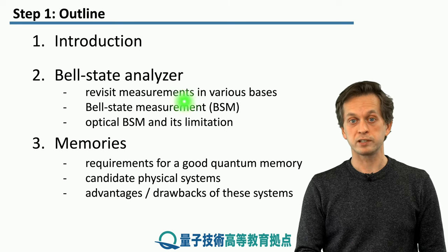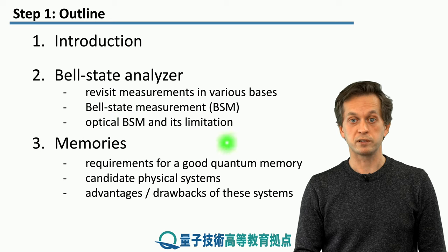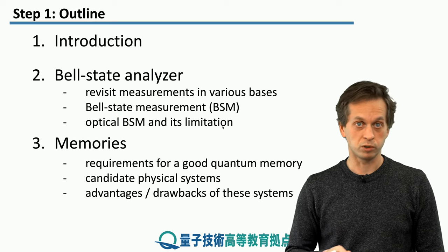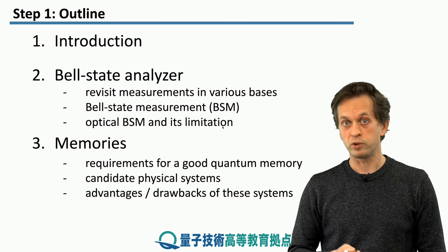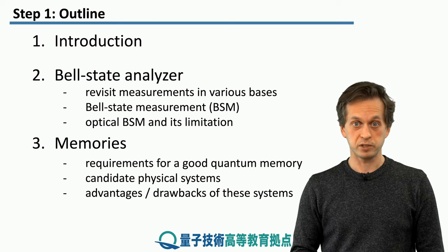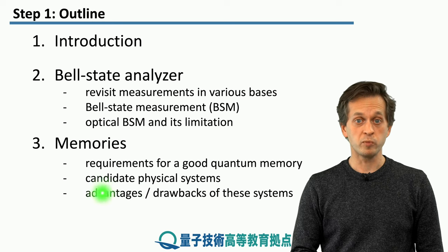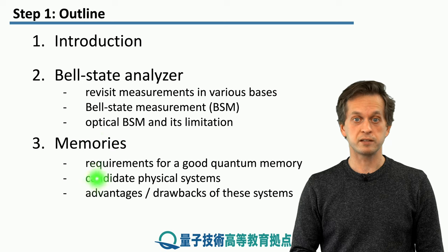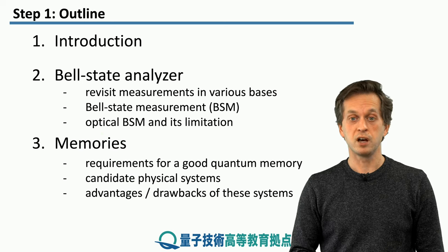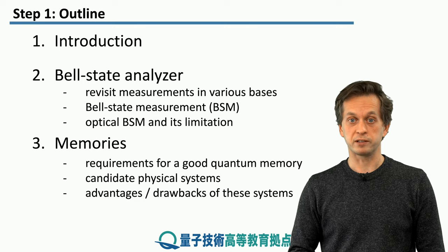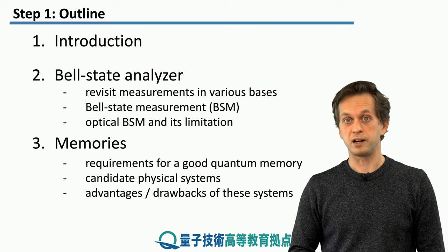In the latter half of this lesson we will talk about memories. We will begin with considerations about what a good quantum memory should be like — what are the requirements? Then we will move on to the candidate systems. At the moment there is no leading physical system considered to be the best quantum memory. All of the existing candidate systems have some advantages and some drawbacks, which we will consider in the latter half of this lesson. So let's begin.